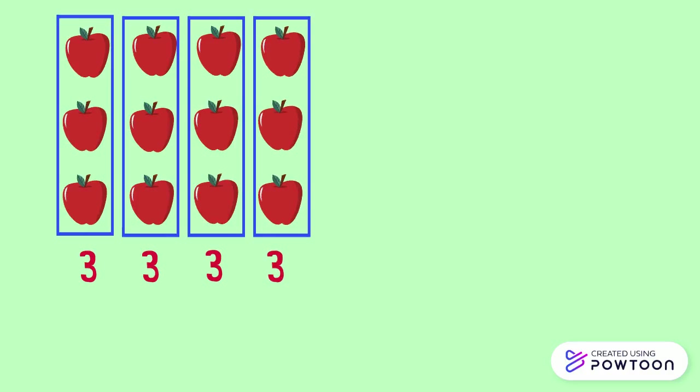So there are four groups of three apples each. This is equal to 3 plus 3 plus 3 plus 3, which equals 12. We have repeated number 3 four times, so it is 4 times 3, which is also equal to 12.